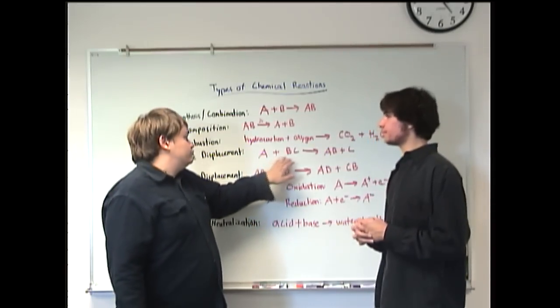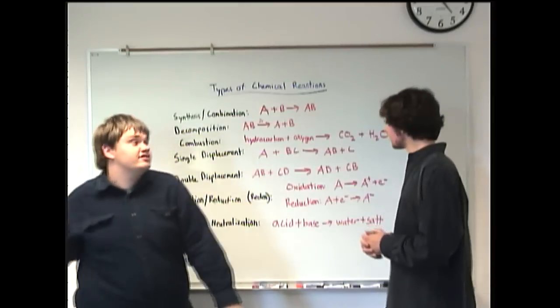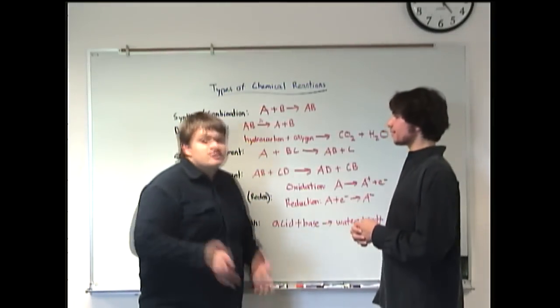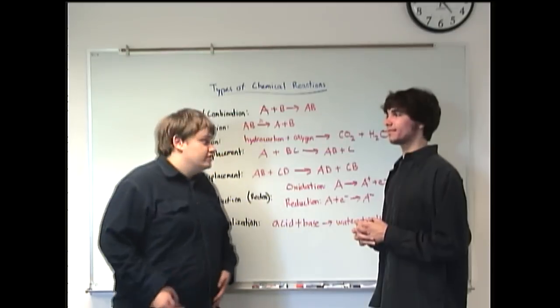So essentially, A plus BC yields AB plus C. In this case, the C was kicked out and the A took its place. That makes sense. It's sort of a forced eviction sort of thing.